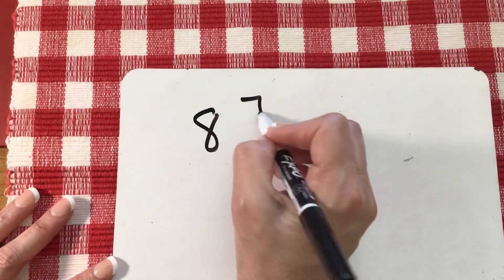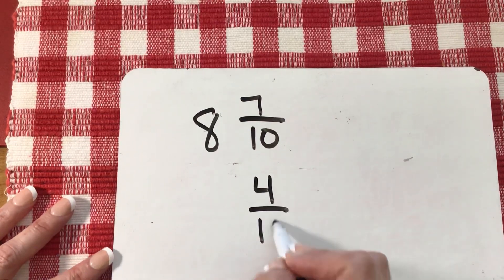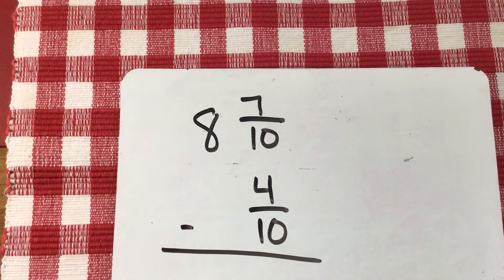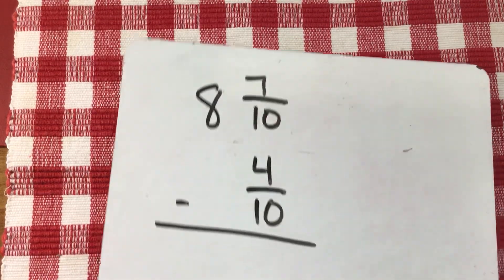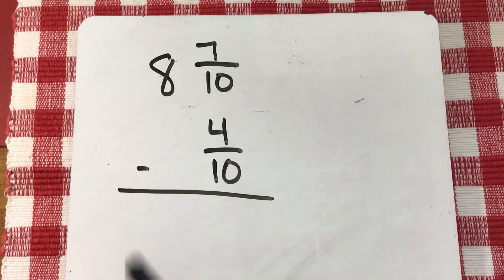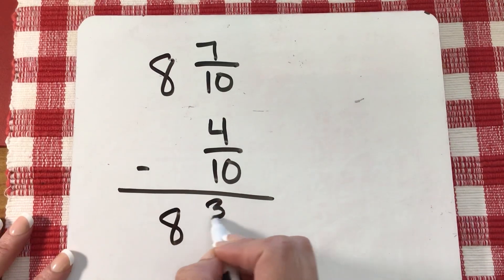For this next one, I'm going to put it on my whiteboard and I would like for you to pause the video and to solve it on your own. You can use any method you want. Don't get tripped up by this one guys, there's just no whole number. So remember if there's nothing here, that's almost like just saying that it's a zero. Go ahead and solve. Pay attention to your operation. Hopefully you're back. Eight and three tenths.